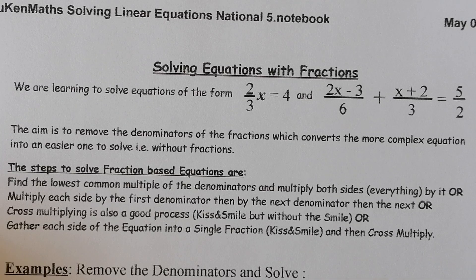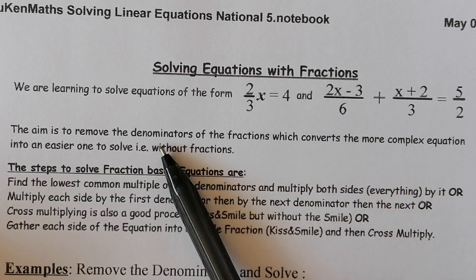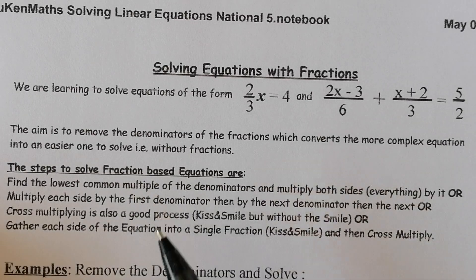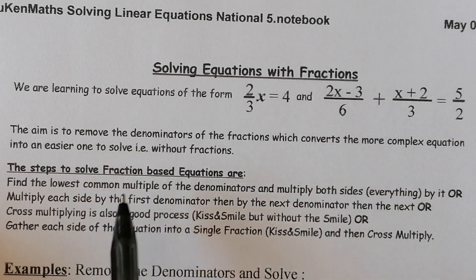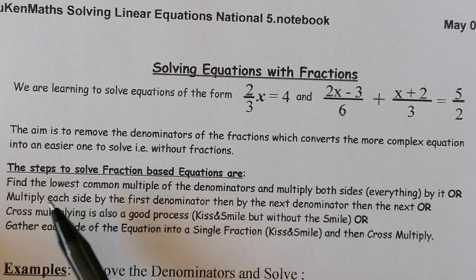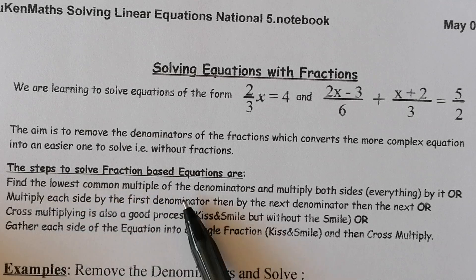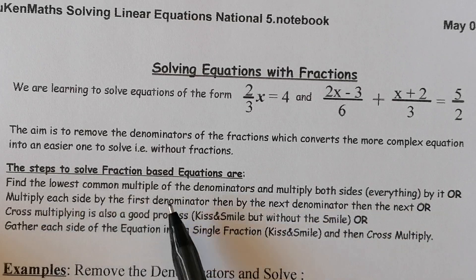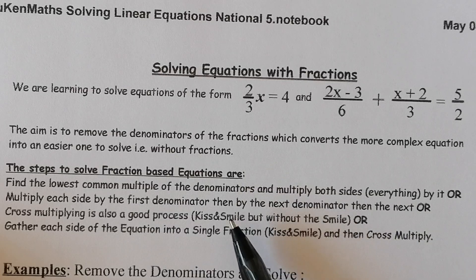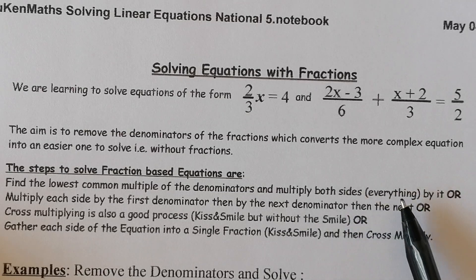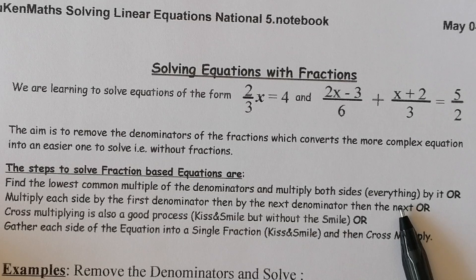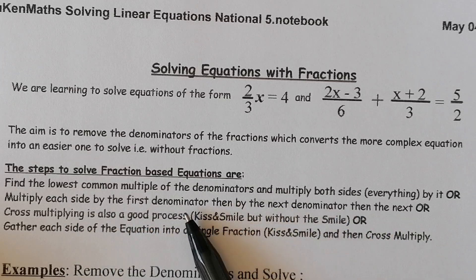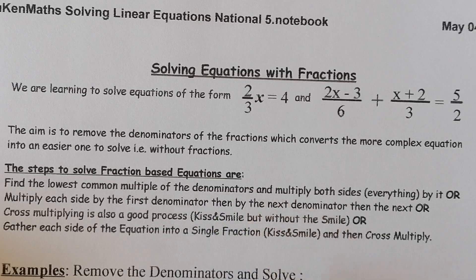The aim is to remove the denominators of the fractions, which converts the complex equation into a more easy equation to solve — one without fractions. One way is to find the lowest common multiple of the denominators and multiply both sides by that number. Or we could multiply each side by the first denominator, then by the next number on the bottom, and so on. We could also use cross multiplying, but what we'll be doing today is multiplying by denominators.